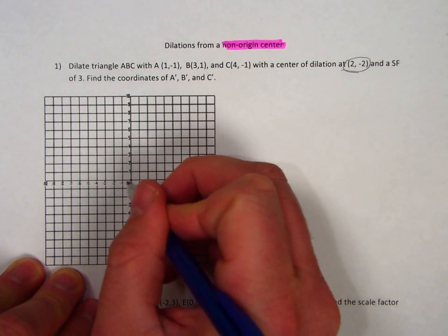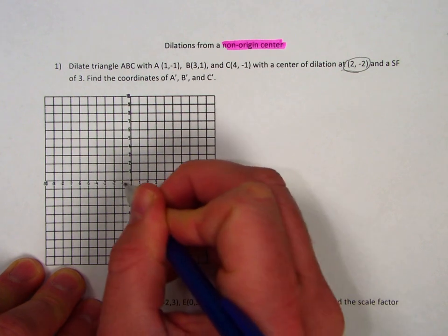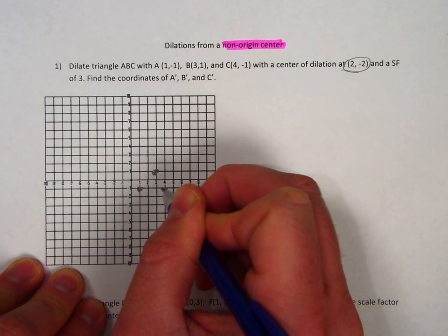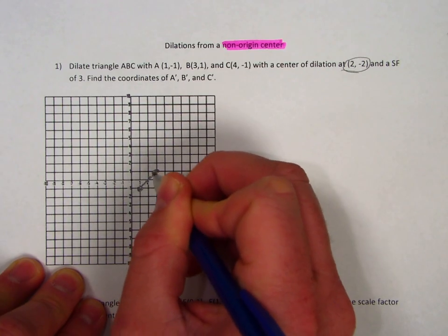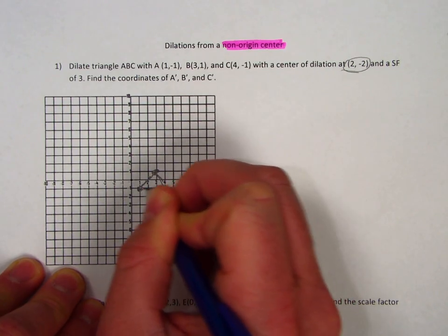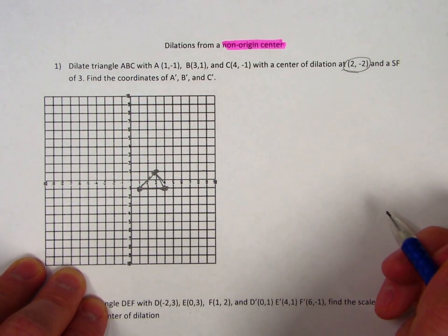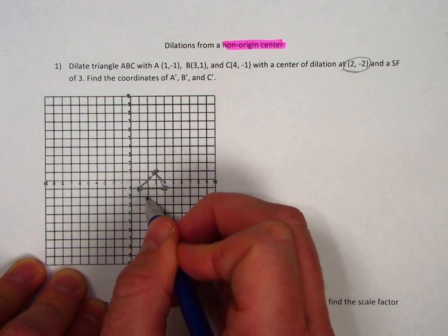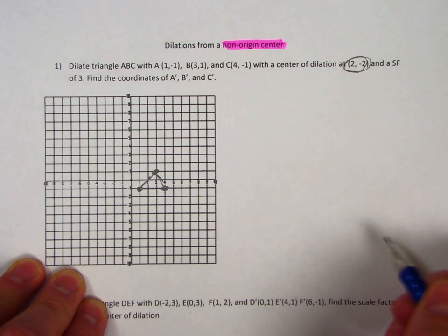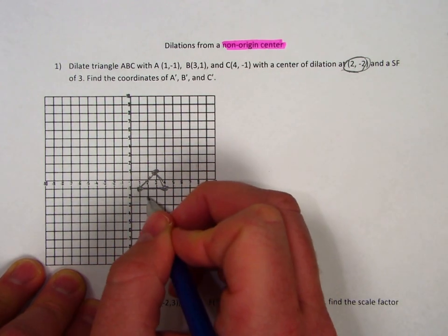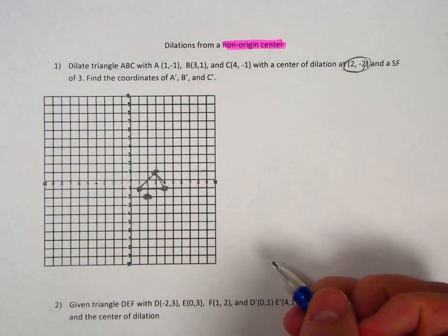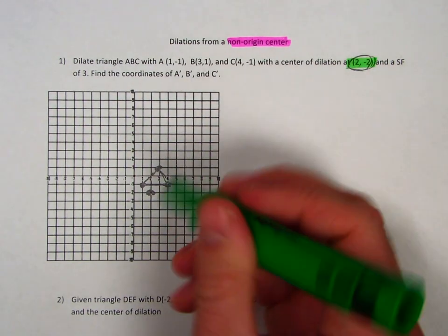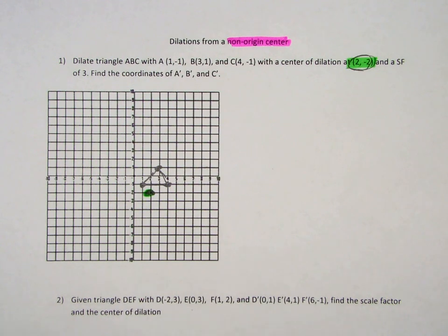Let me start by plotting the original. One negative one is there, three one is there, and four negative one is there — those are my original figure. Now, this says we're going to use a center of dilation of two, negative two. I'll plot that center of dilation in green so we can see it — that's our center of dilation.